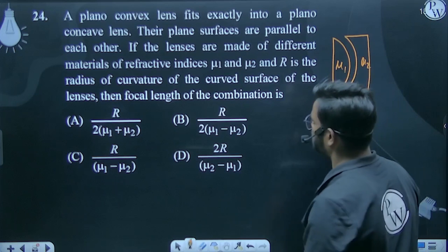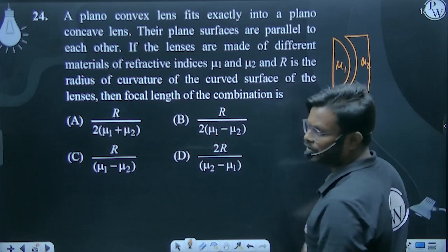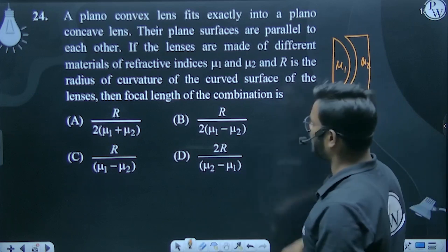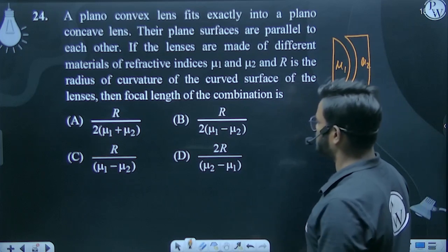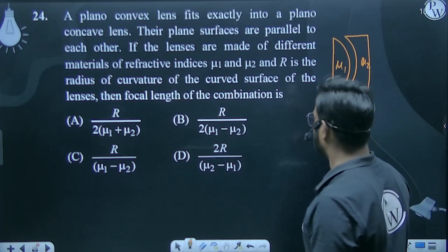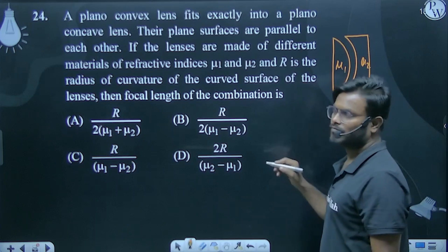R is the radius of curvature, radius of curvature same for both lenses. Then focal length of the combination, this combination's focal length...